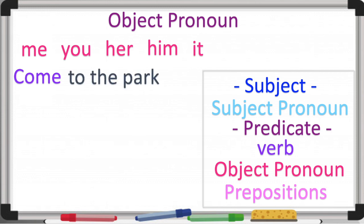Next sentence: 'Come to the park with us.' This sentence starts with a verb — that's okay. 'Come' is the verb, 'to the park with' contains the preposition, and 'us' is the object pronoun. Come to the park with us.